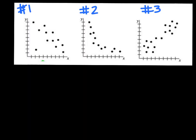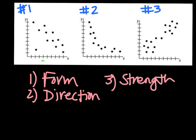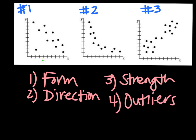I'd like you to go ahead and try to describe these three scatter plots. Please describe their form, their direction, their strength, and if there are any clusters or outliers. If you can describe those four things for all three of these problems, we'll be checking those out tomorrow. If you have any questions, make sure you ask your teacher. Have a good night. Bye.